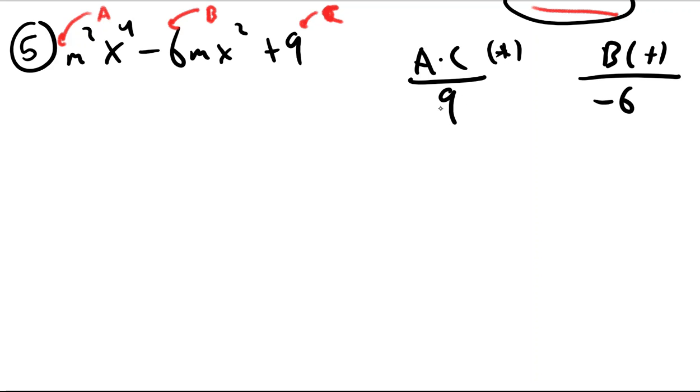So there's not a million things that multiply to 9. There's 1 and 9, negative 1 and negative 9, 3 and 3, or negative 3 and negative 3. I would pick the number combination that also adds up to negative 6.